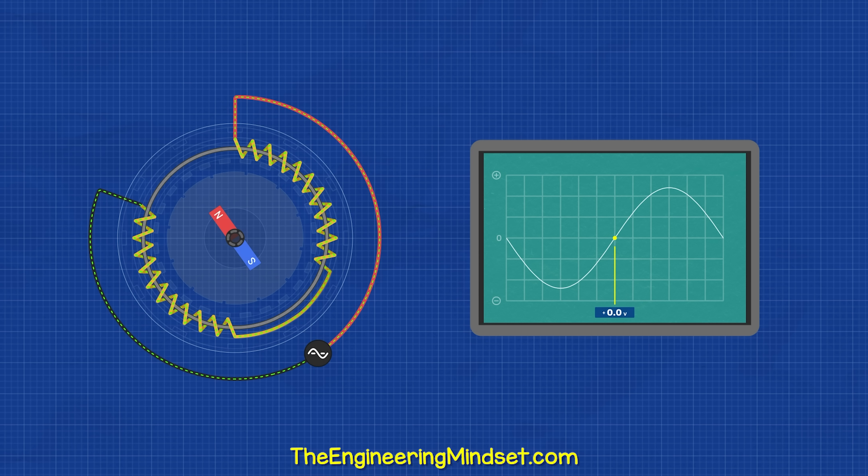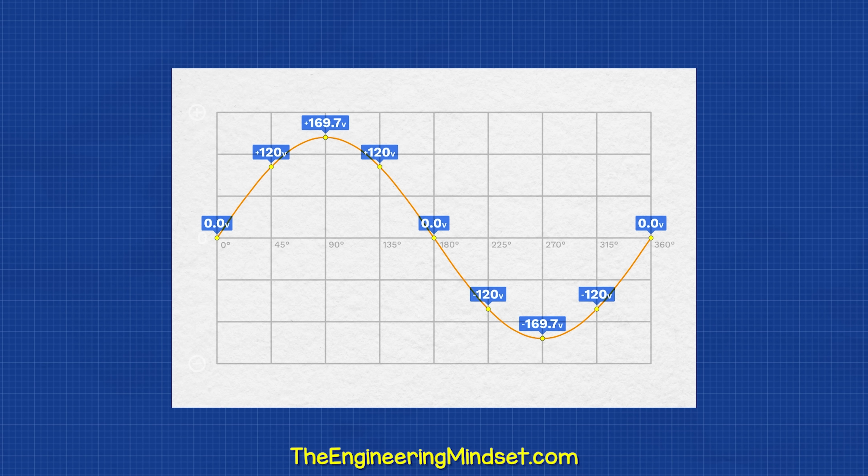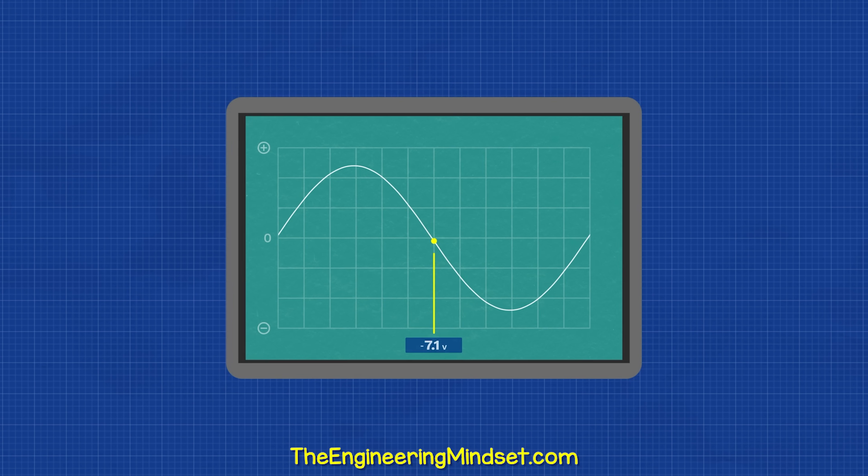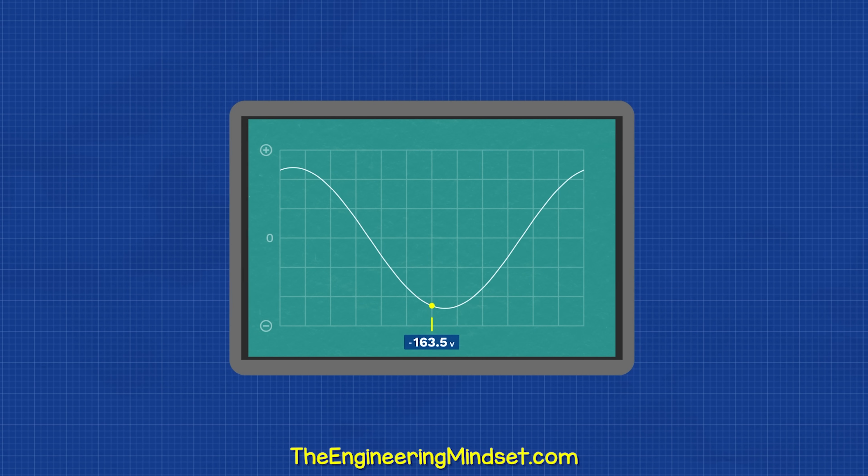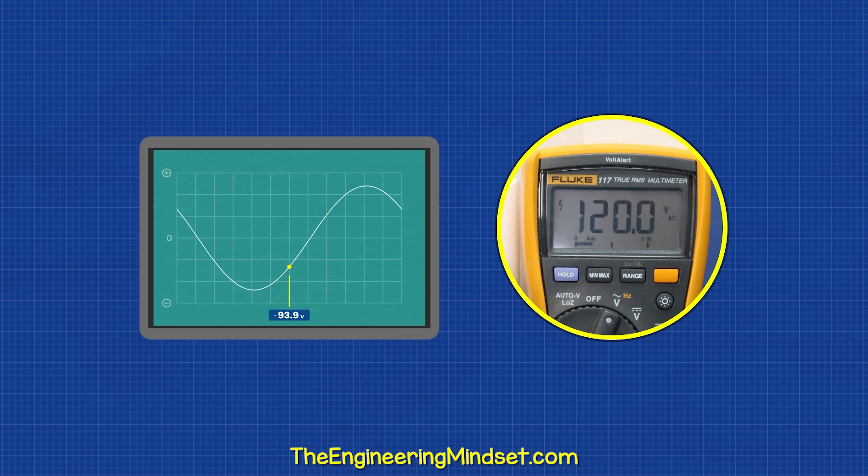So we have a single phase generator. The voltage will start at zero, then increase up to the peak positive value, and then decrease back to zero. Then on the negative half, the value will increase to the peak negative value and again decrease back to zero. This is what the sine wave is representing. Notice this value changes, but the voltage at the outlet is constant. I'll explain why later on in the video.